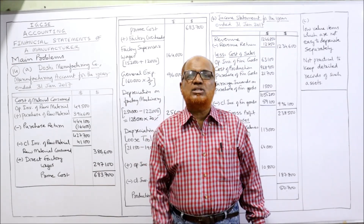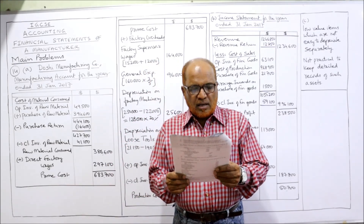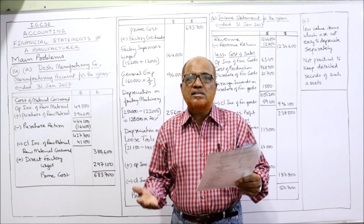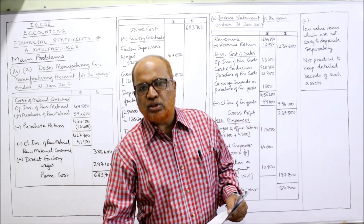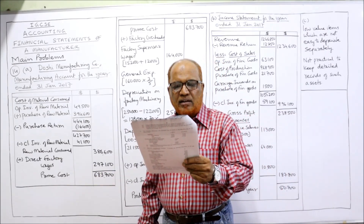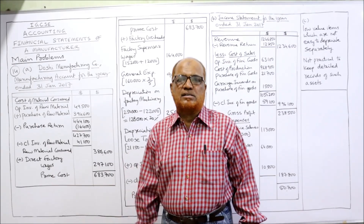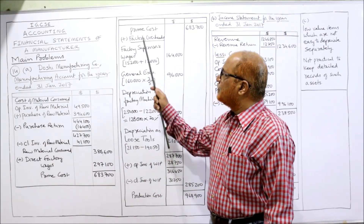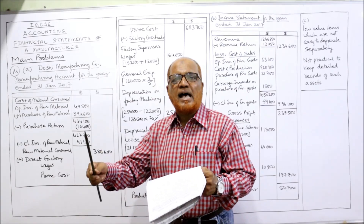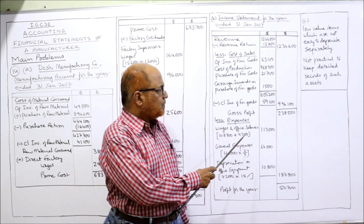Carriage inward on purchase of finished goods: in the income statement, we add carriage inward on purchase of finished goods. Wages — factory operatives means wages paid to factory workers, these are direct wages: 297,100. This will be taken as direct wages. Factory supervisor wages paid to a factory supervisor are indirect wages — that will be taken under factory overhead. Office and sales staff wages and salaries will be taken in the income statement, not in manufacturing.